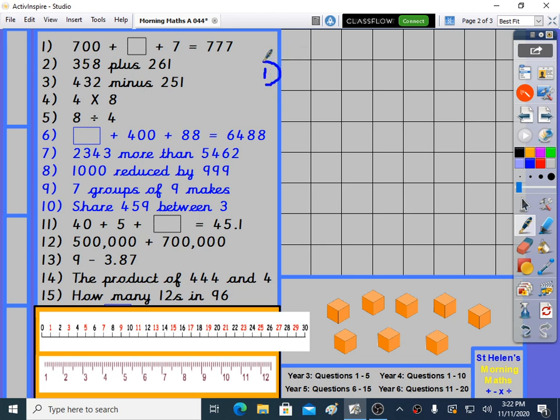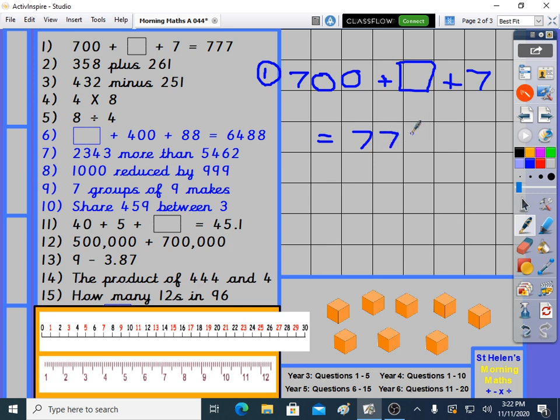Question 1: 700 plus a mystery plus 7, that's what it says, equals 777. We've got 700, 7 tens, 7 units. We've got 700 there but nothing else, nothing in the tens, nothing in the units. Over here we've just got units. What's missing is the 7 tens, 7T. So we'll write 7T in here because that's what's missing.